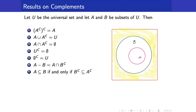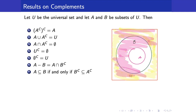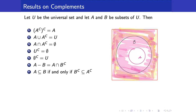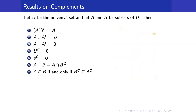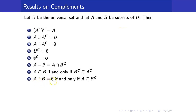This is the complement of B, whereas this whole thing here is the complement of A. It is much bigger than the complement of B and it actually contains all of B complement. Next, A intersection B is the empty set, meaning they share nothing in common, if and only if A is a subset of B complement.